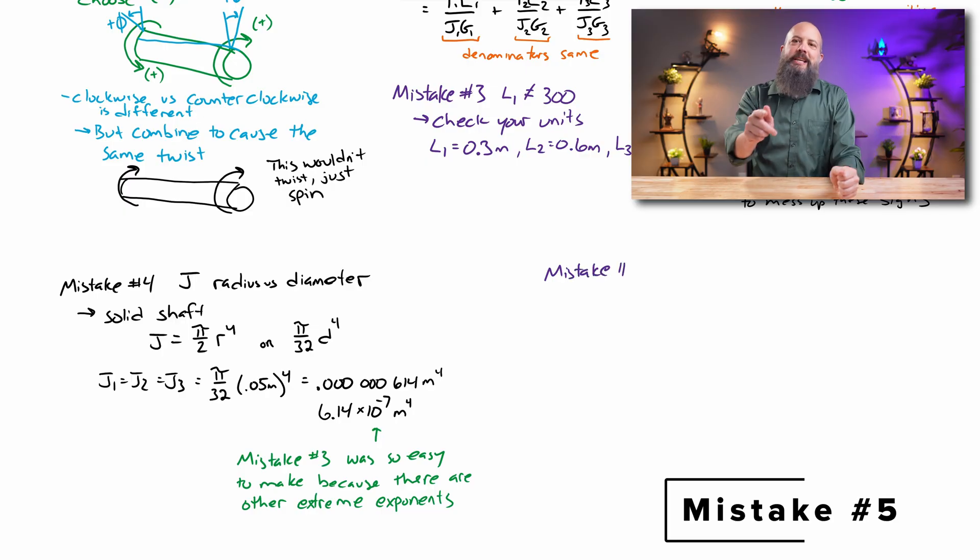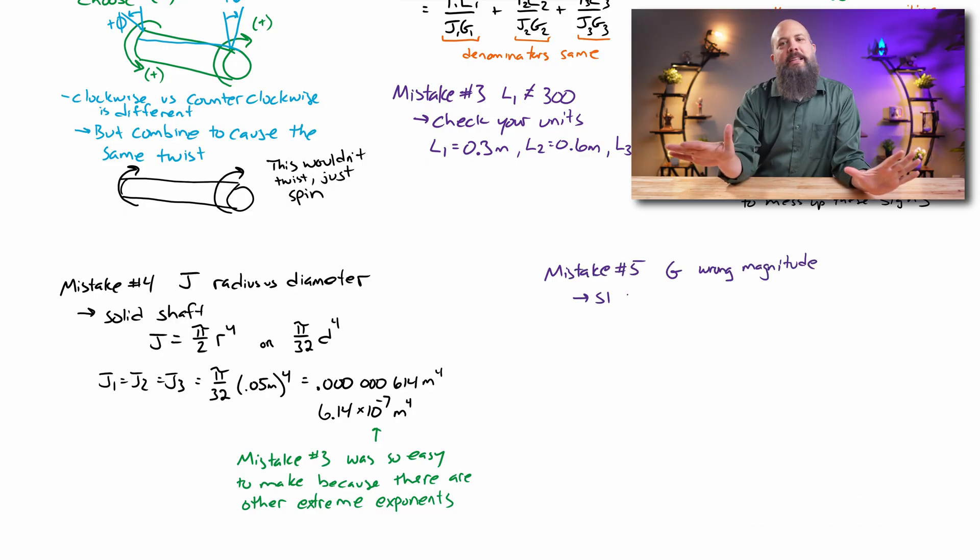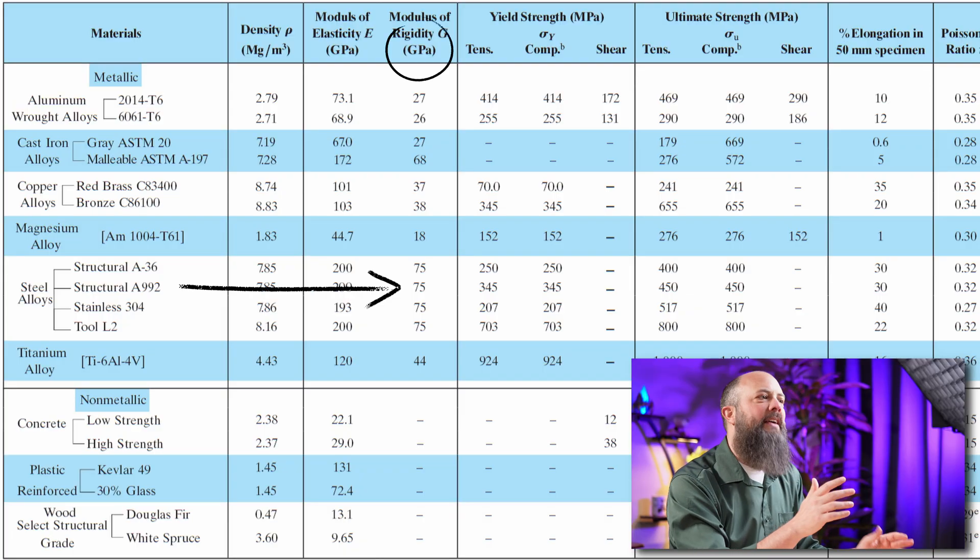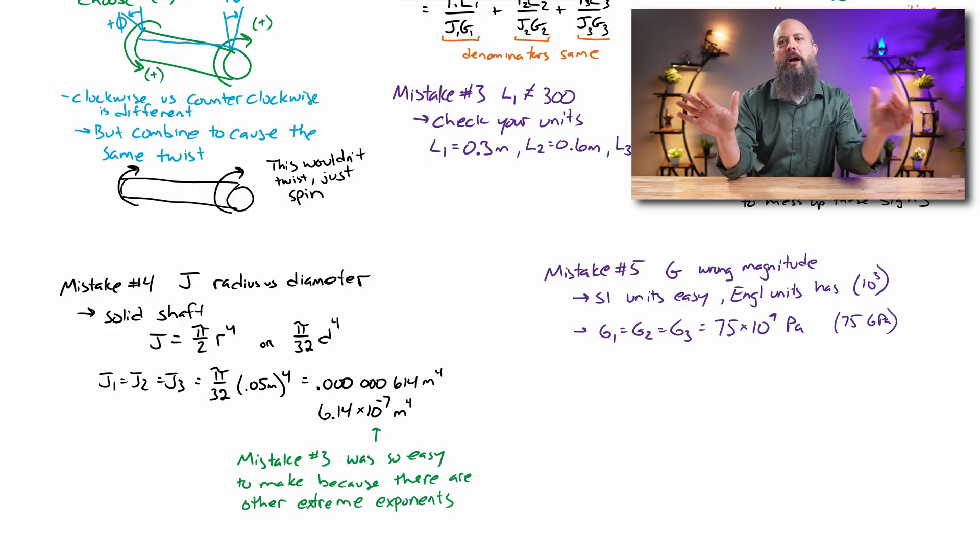Mistake number five: G, modulus of rigidity. In SI units, you're probably going to get this right pretty easily. You just look up the numbers, 75 gigapascals, so that's 75 times 10 to the 9. Easy, no problem.